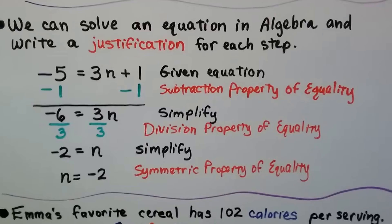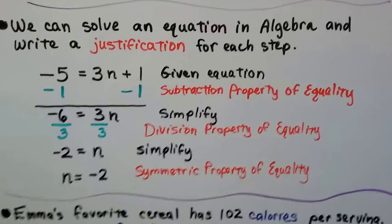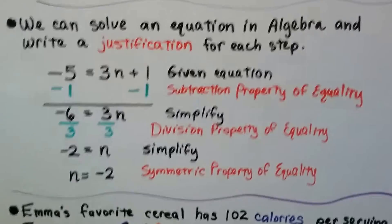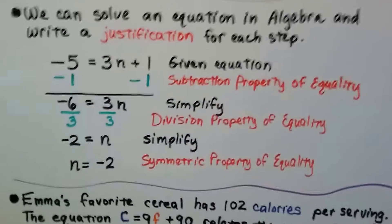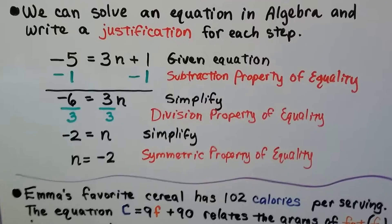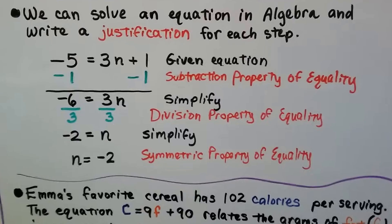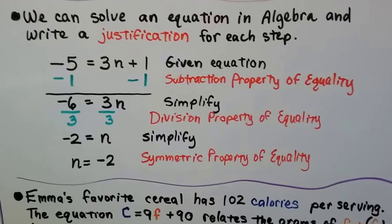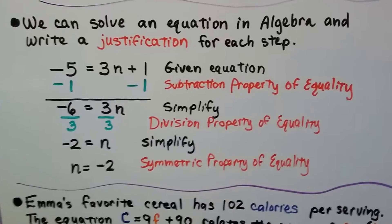We can solve an equation and write a justification for each step. Given: negative 5 equals 3N plus 1. Using the subtraction property of equality, we subtract 1 from each side, creating a zero pair on the right, leaving negative 6 equals 3N. Then using the division property of equality, we divide both sides by 3, getting negative 2 equals N. Finally, using the symmetric property, we write N equals negative 2.